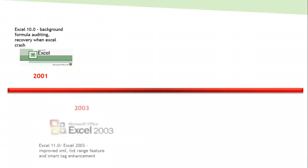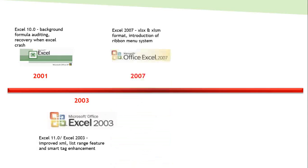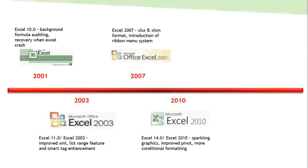In 2003, Excel 11.0 came up which had improved XML list range features and smart tag enhancements. In 2007, the ribbon menu system was introduced in Excel and it had many more functionalities.